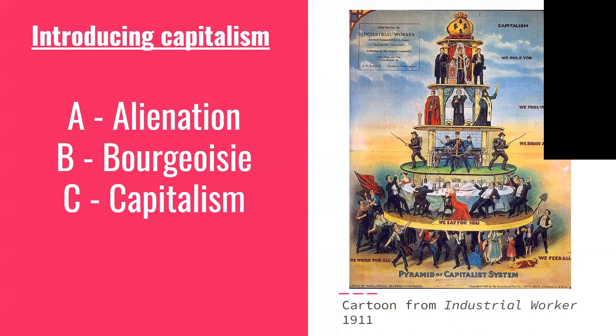This involved overturning monarchs, displacing the aristocracy, restructuring government, introducing parliamentary democracy and changing ownership laws. As the needs of capitalism developed, the bourgeoisie embarked on imperialism, war and colonialism to expand their economic activity around the globe.